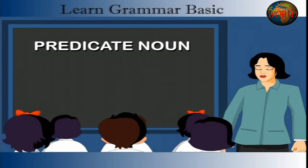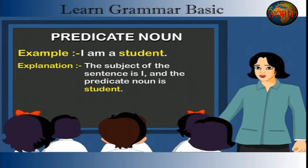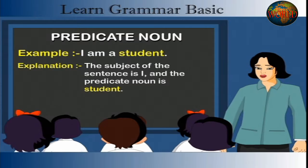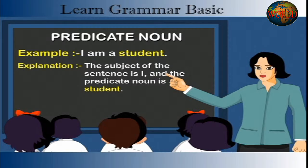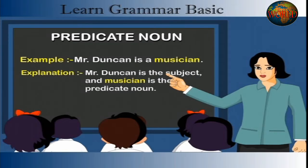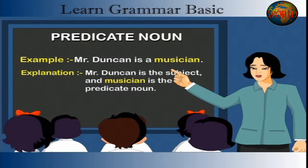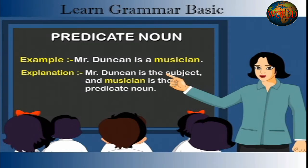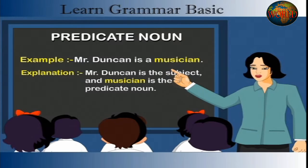Predicate Noun. Example: I am a student. Explanation: The subject of the sentence is 'I' and the predicate noun is 'student'. Example: Mr. Duncan is a musician. Explanation: Mr. Duncan is the subject and 'musician' is the predicate noun.